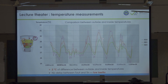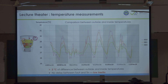In a high inertia building you would have a delay of about 2 hours and a smaller indoor temperature variation. In this low inertia lecture theater, the variation between night and day inside is more than 3 degrees, while outside the variation is about 5 degrees. In a high inertia building that variation would be only 2 degrees.